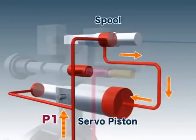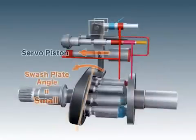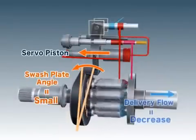As the servo piston moves, the inclination of the swash plate decreases, reducing the delivery flow.